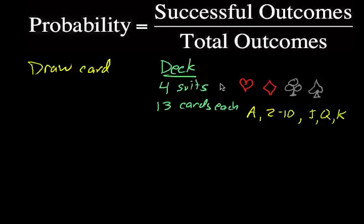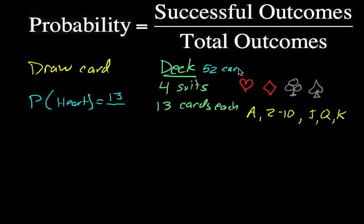What's the probability that if we were to draw a card from a deck of cards, what is the probability of drawing a heart? The definition of probability is successful outcomes over total outcomes. So the probability of drawing a heart, well, there are 13 cards in each suit, which means there are 13 hearts. A deck of cards, I forgot to mention, 4 times 13 is 52 cards. So there are 13 hearts out of 52 cards.